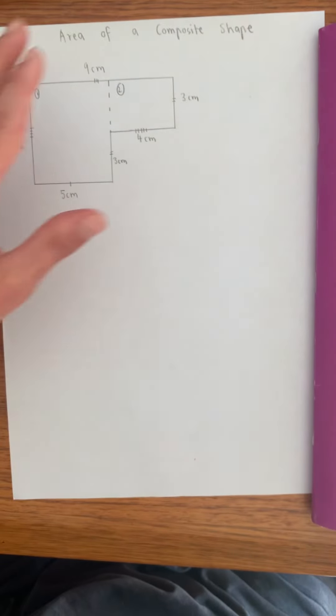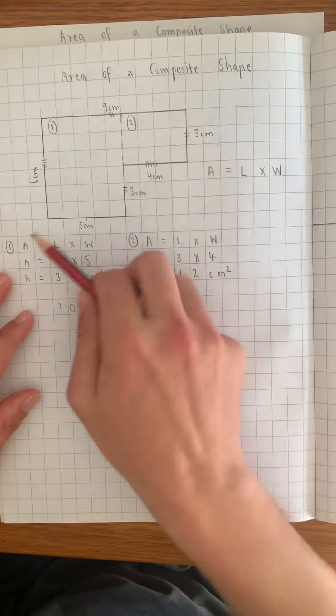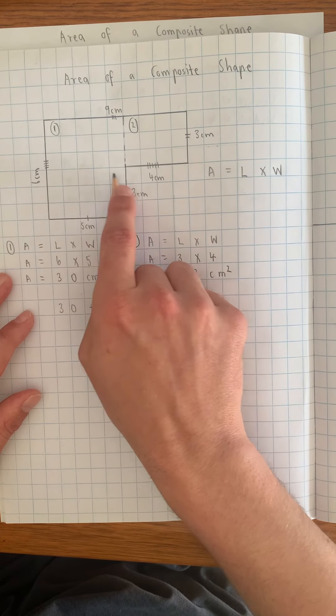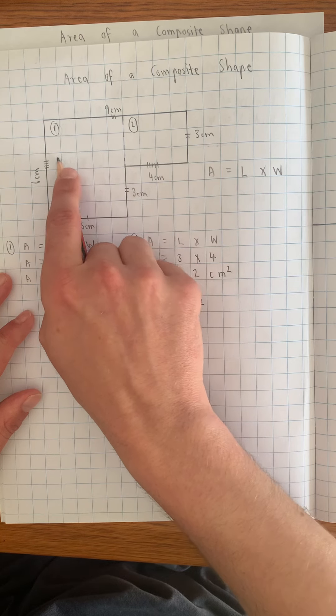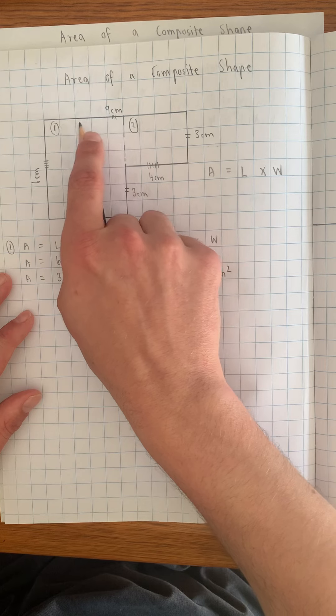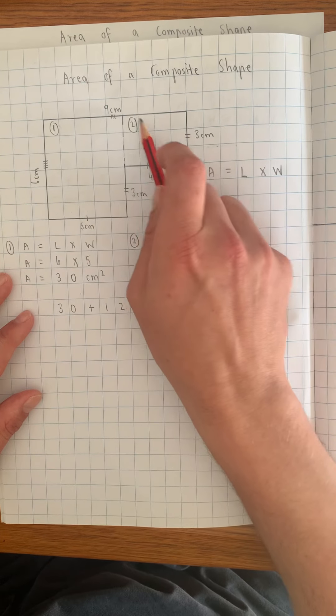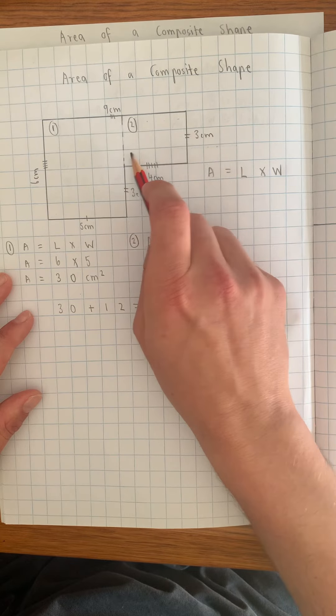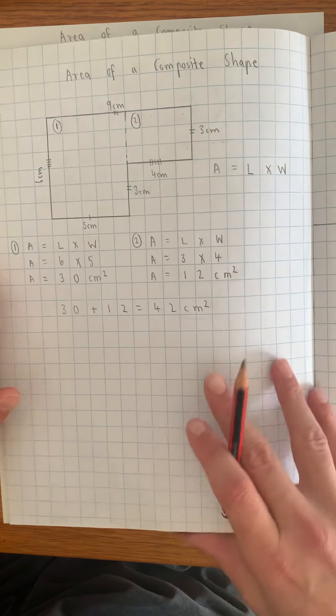So if you look at this one, 1, 2, 3, 4, 5, 6, 7, 8, 9, 10, 11, 12, 13, 14, 15, 16, 17, 18, 19, 20, 21, 22, 23, 24, 25, 26, 27, 28, 29, 30, 31, 32, 33, 34, 35, 36, 37, 38, 39, 40, 41, 42. And that's my answer down here.